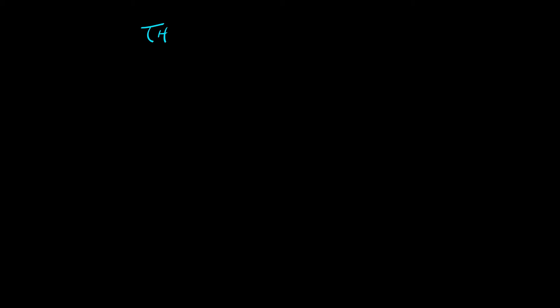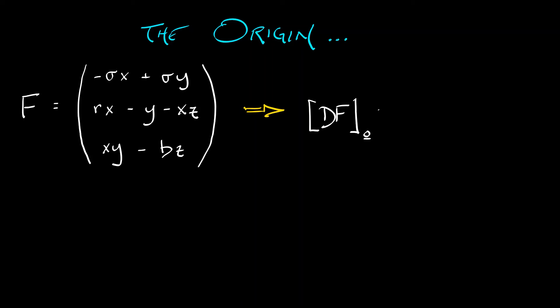But let's go slowly and carefully, beginning with the origin. If we take the right-hand side of the Lorentz system, call that f, then the derivative of f evaluated at the origin is, well, this is easy. We can just read it right off from this polynomial.